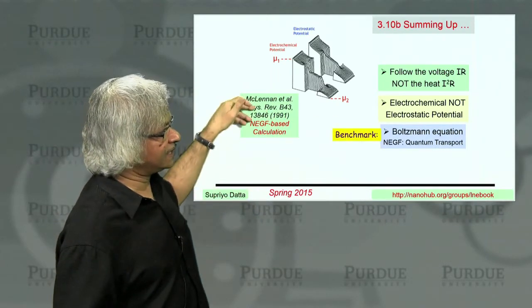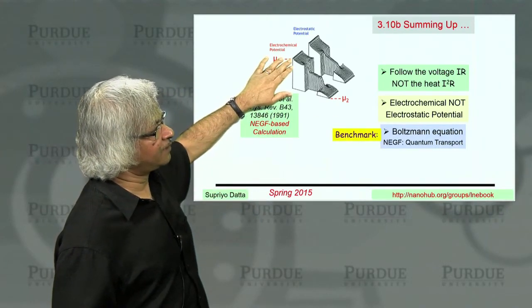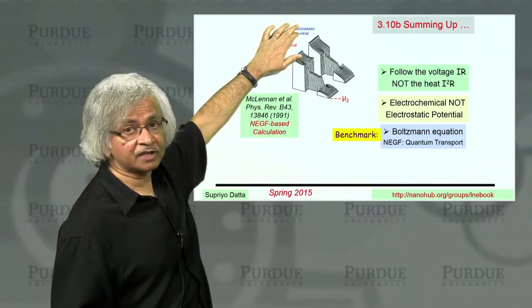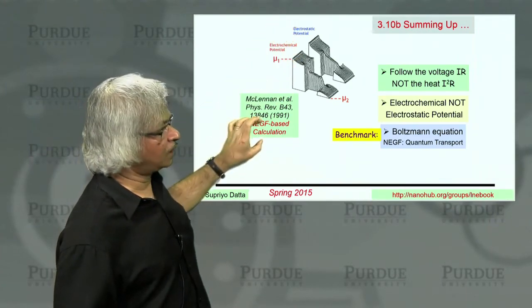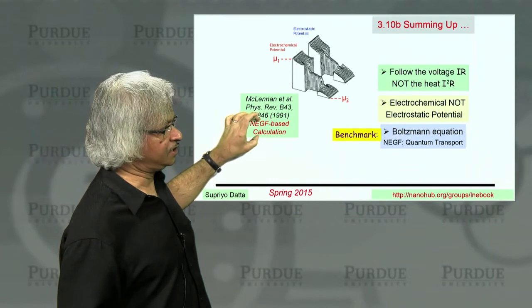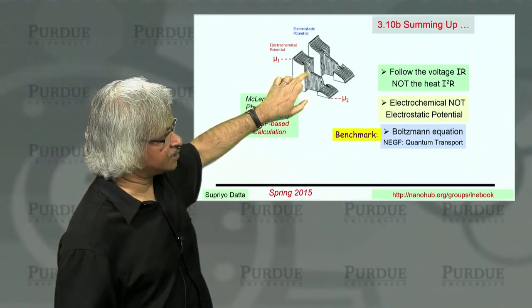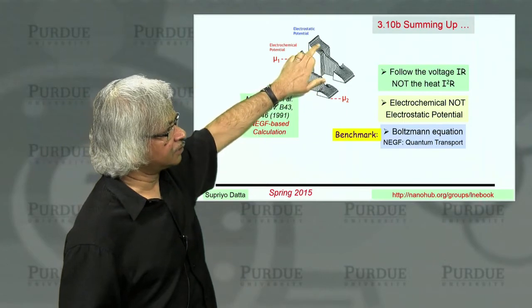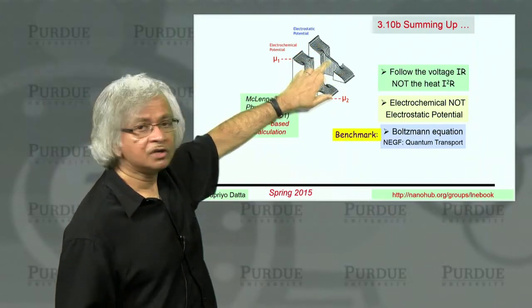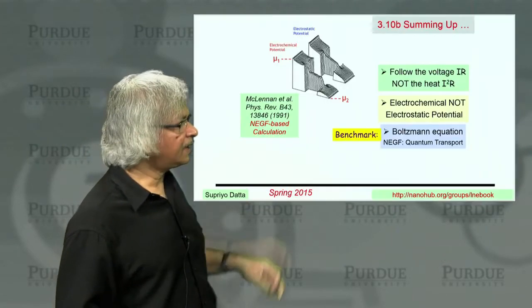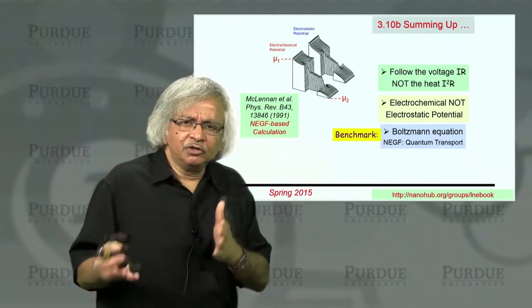So what I've shown here, for example, is a calculation of the electrochemical potential and the electrostatic potential using this quantum formulas, this NEGF. And you can see the electrochemical potential has these sharp drops, whereas the electrostatic potential tends to be more smoothed out.